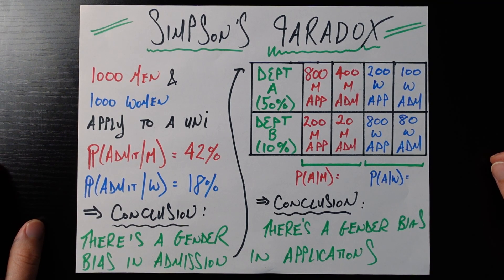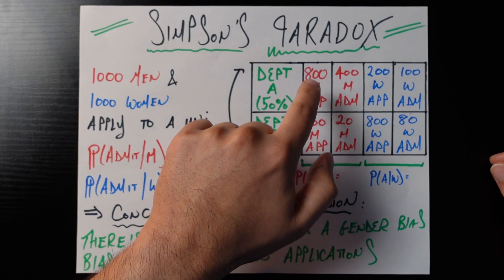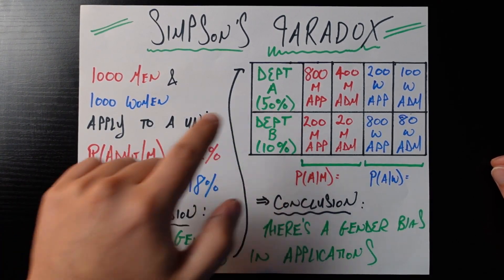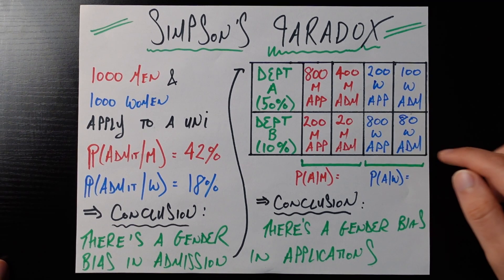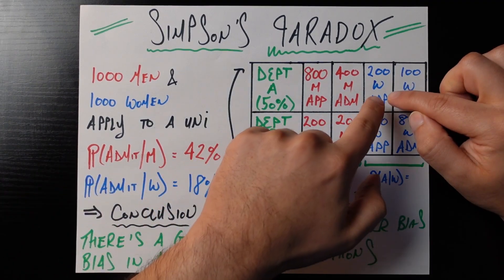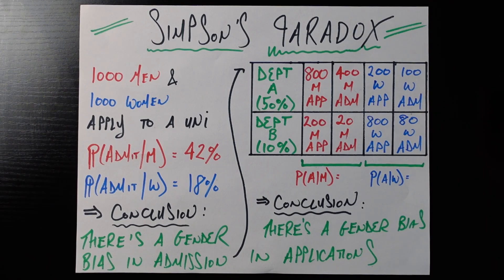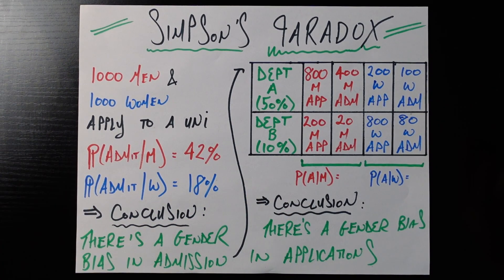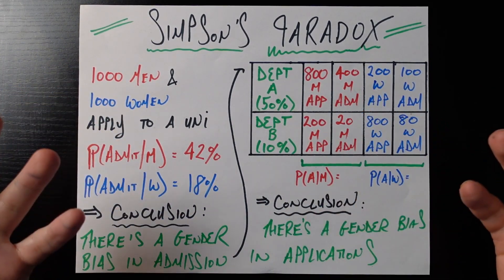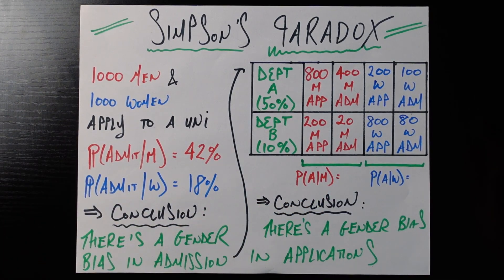Now, let's take a look at the applicants by gender. So let's say for Department A, there's 800 male applicants. Now, because there's a 50% admission rate, 400, half of those get in. And let's say there's 200 women applicants to Department A. And again, half of those or 100 get in. Now, Department B is basically just the remaining men and the remaining women would have applied there. So we see for Department B, 200 men applied and 10% of those or 20 got in. And the remaining 800 women applied there and 10% of those or 80 women got in.